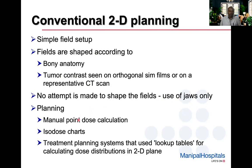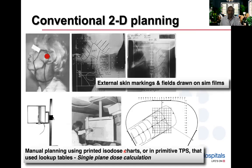For planning, we either use manual point dose calculation or printed isodose charts. Treatment planning systems, if at all they are used, they always use only lookup tables for calculating the dose distribution in a simple 2D plane. That's how we did 2D planning using simulator films and external skin markings, with fields drawn on the simulator films.